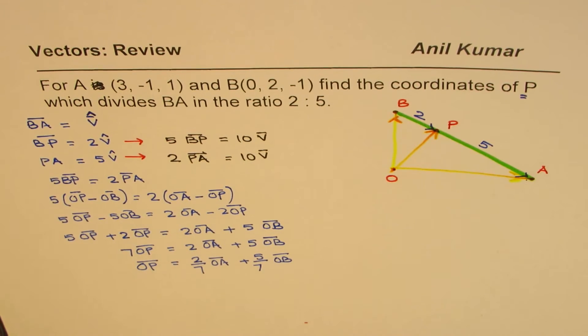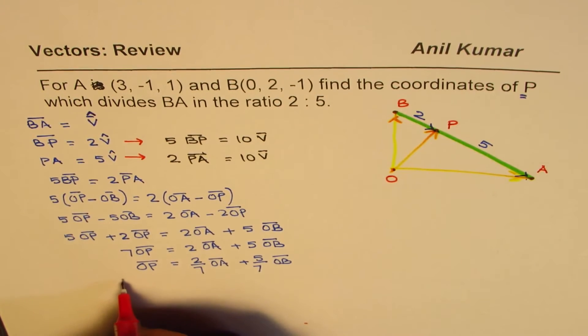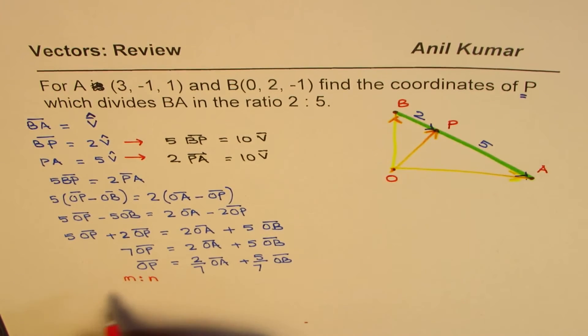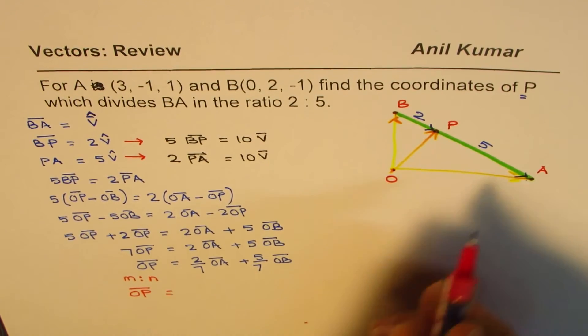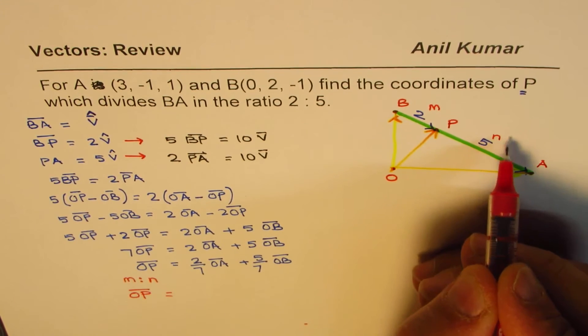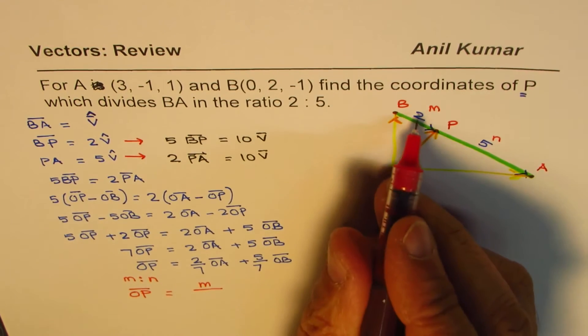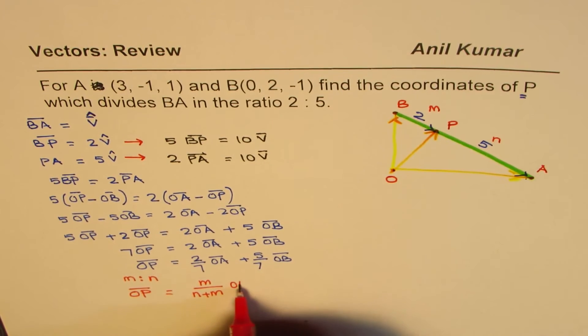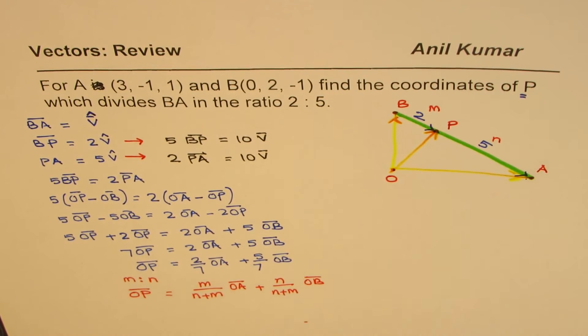So that is how we get this particular relation. So position vector P now can be found easily. Well, in our case, we have taken the ratio of 2:5, but in general, if we have a ratio of M:N, in that case, this formula, see OA, when I'm multiplying with, I'm multiplying by 2. So in that case, if I do, instead of 2:5, if I do M:N, then general formula will be OP for the given diagram.